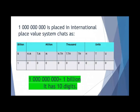To write numbers in the international place value system, you have to learn about the place value table. In the place value table there are four families: units, thousands, millions, and billions.